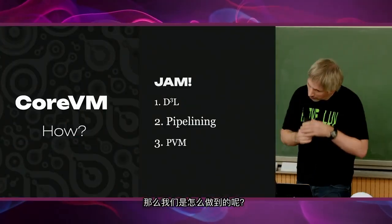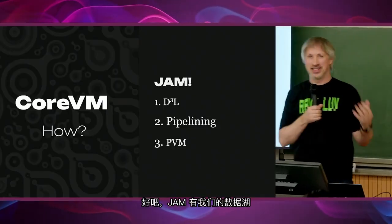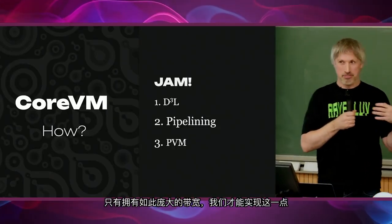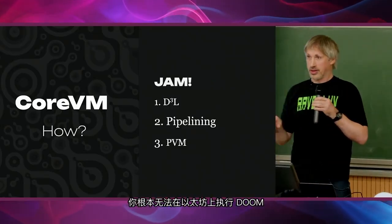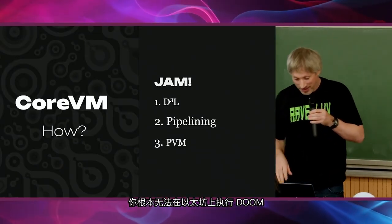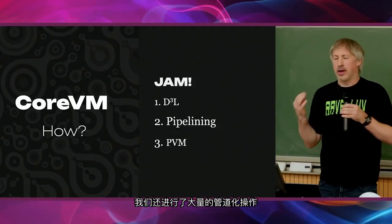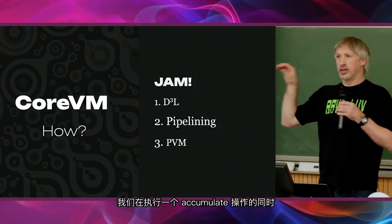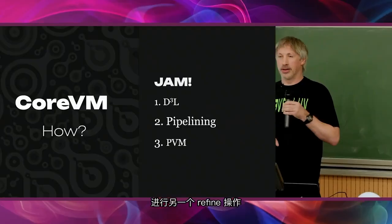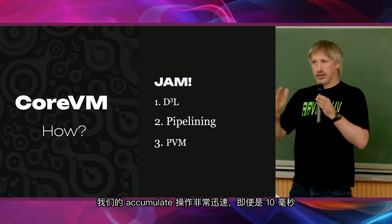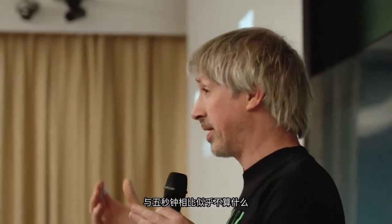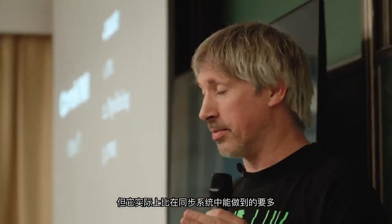So how are we doing this? JAM has our data lake — it's only with this massive amount of bandwidth that we could possibly do this. There is no way you could execute Doom on Ethereum. We also pipeline a lot: we do one accumulate at the same time as doing another refine, and in fact we pipeline even more than that. Our accumulate is only about 10 milliseconds — it doesn't seem very much compared to five seconds, but it's actually more than we would otherwise be able to do in a synchronous system because we actually pipeline blocks.